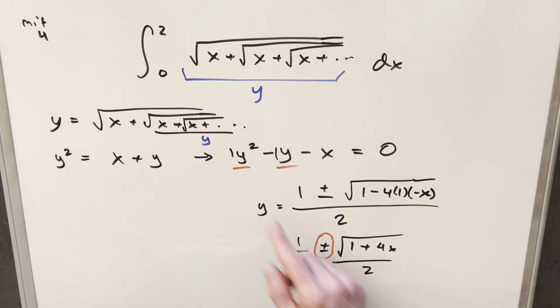Looking back at our original integral, because the whole thing is inside a square root, our y value has to be positive. If we used a minus sign within these bounds from 0 to 2, this expression always becomes negative. For example, plugging in 1, you get half minus square root of 5 over 2, which is negative. So we need to get rid of the minus because that creates impossible negative values for y.